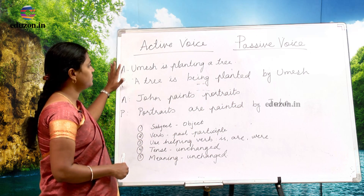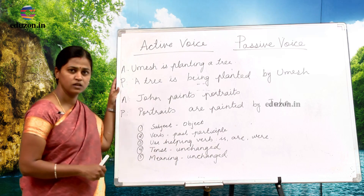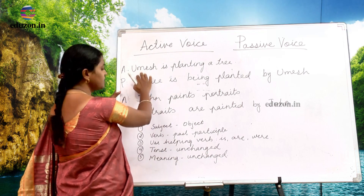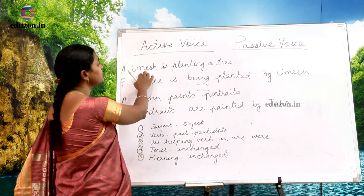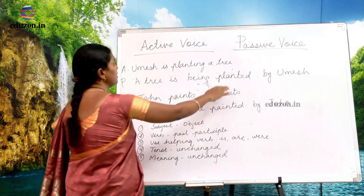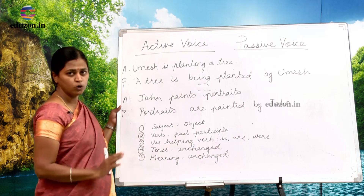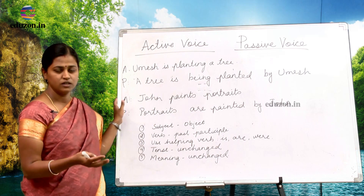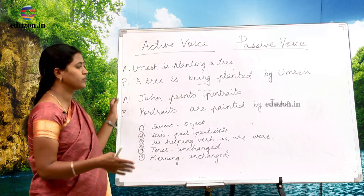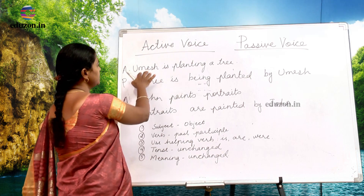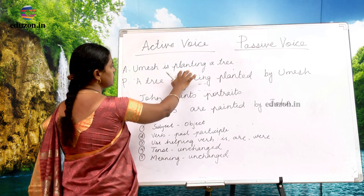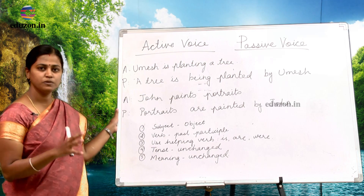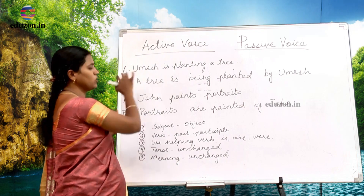What is the difference in these two sentences? In the first sentence, Umesh is the subject and tree is the object. Planting is the action — that is the verb. In active voice, subject does an action on the object, and you speak it in active voice.